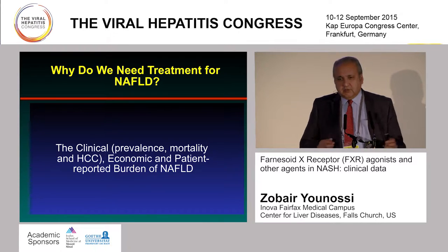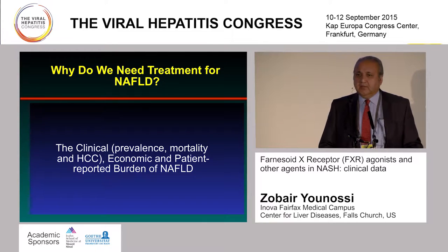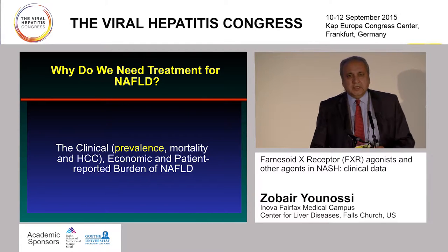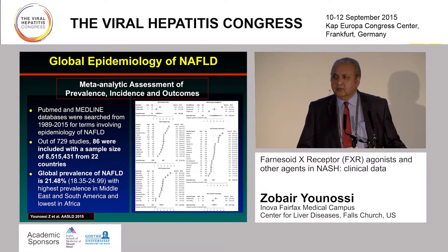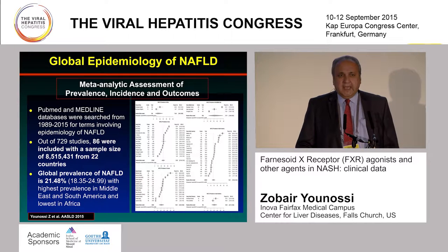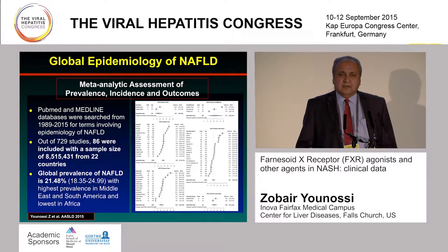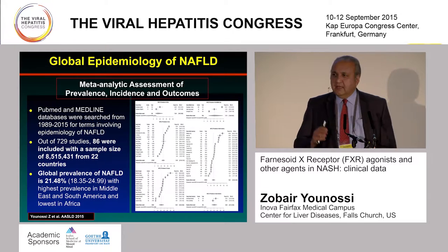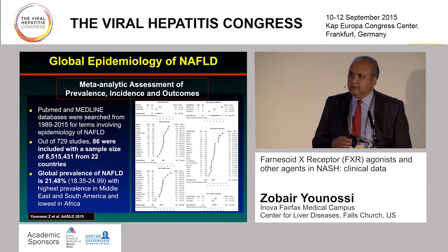To put this question in the context of clinical, economic, and patient-reported outcomes related to NAFLD is how I'm going to approach this. When you're looking at the prevalence data — some of this is quite new, from 2015. This is a meta-analysis we did to look at global prevalence of non-alcoholic fatty liver disease. The data came from 22 different countries, and 8.5 million individuals were included. The global prevalence of NAFLD is about 21.4%. It is lowest in Africa at about 11%, highest in the Middle East and South America, and in Europe and North America the prevalence is about 20%.